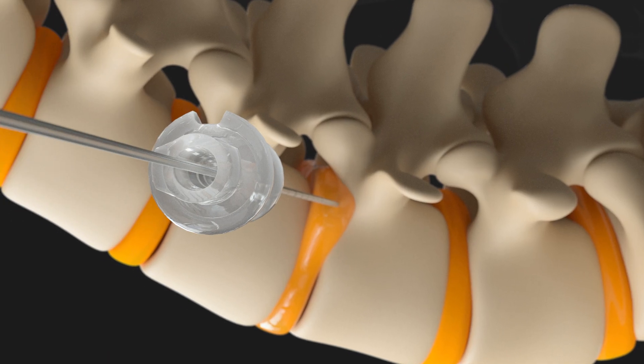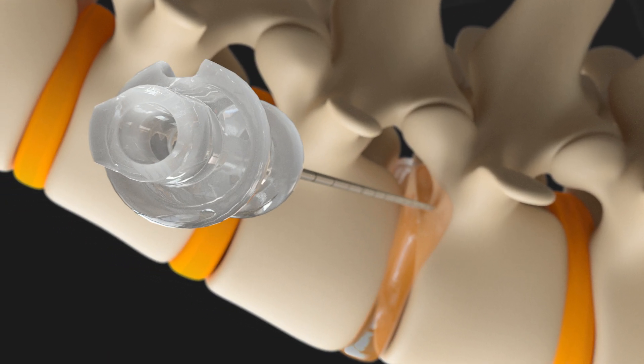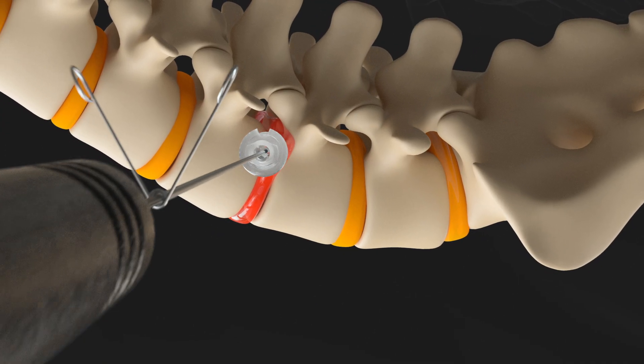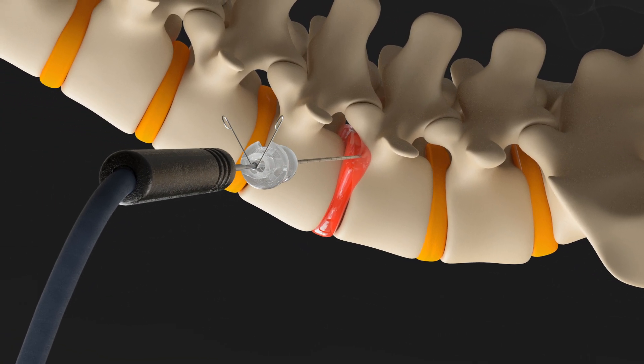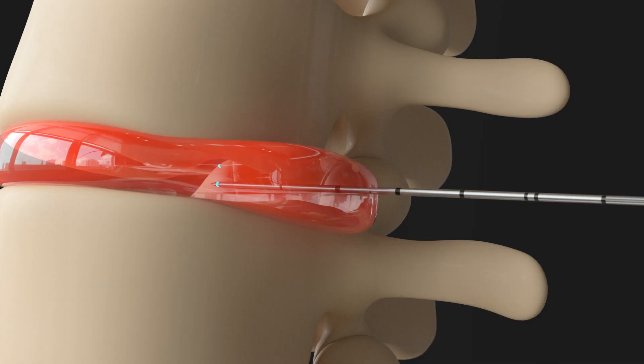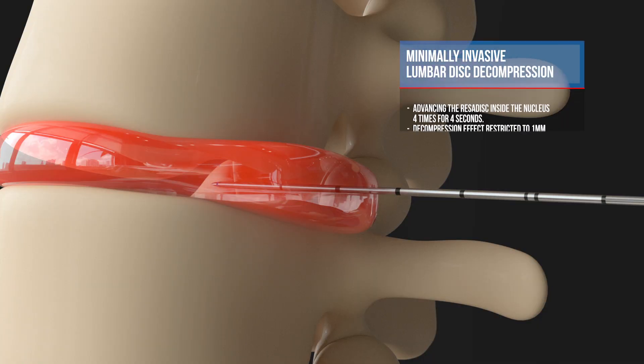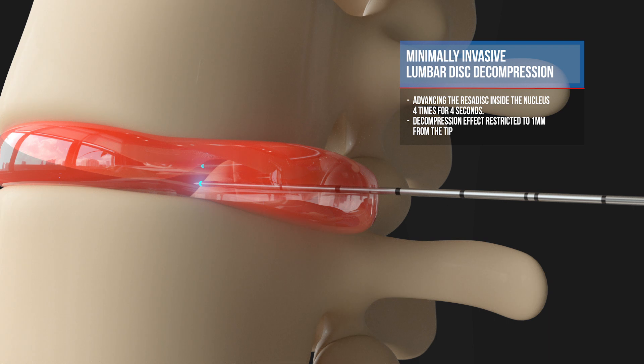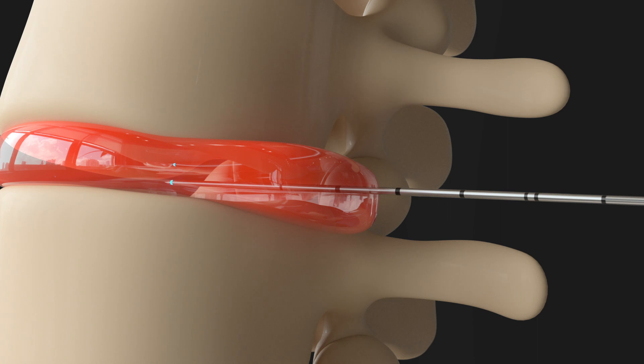Pull out the stylet, insert Residisc and connect it with the Resoblator Smart. Perform disc decompression by advancing the Residisc inside the nucleus four times for four seconds. The resulting effect is focused one millimeter from the electrode tip.